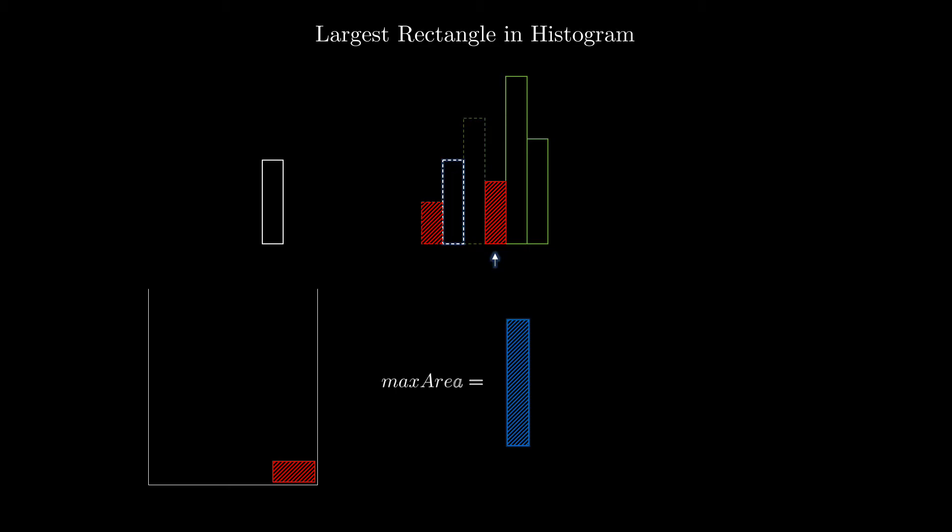And as you might have guessed, the rectangle formed between these left and right elements with the height equal to popped element is max rectangle for the popped element. Since this is greater than our previous max area, we update the max area with a new value.